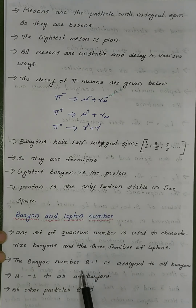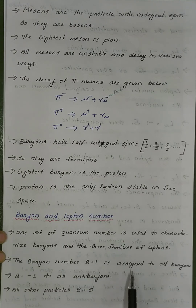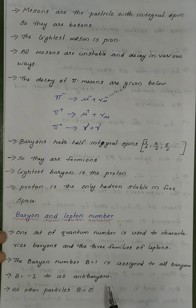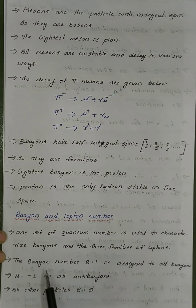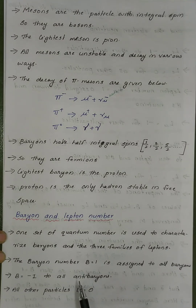The Baryon Number B is equal to 1. It is assigned to all Baryons.